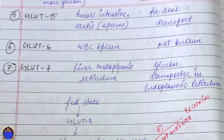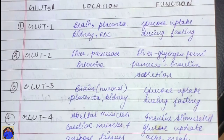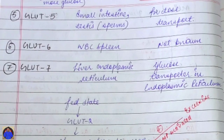To summarize and help remember: GLUT1 and GLUT3 have similar locations — brain, placenta, and kidney — with the difference that GLUT1 is also present in RBCs. GLUT2 is in liver and pancreas. GLUT4 is in the muscle tissues. GLUT5 is in small intestine and testes — fructose is present in sperm, so GLUT5 handles fructose transport. GLUT6 is in WBCs and spleen. GLUT7 is in the liver endoplasmic reticulum.